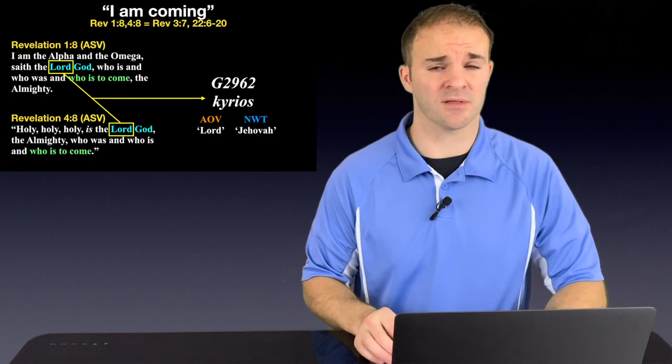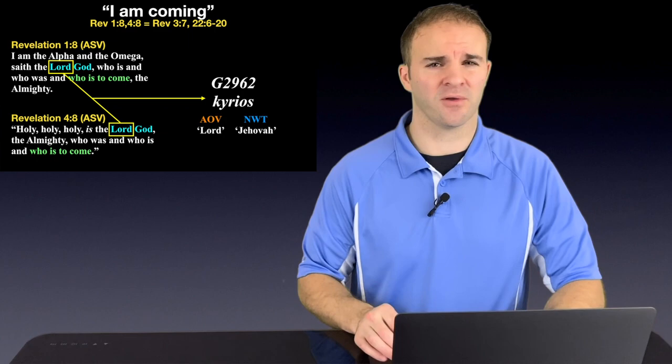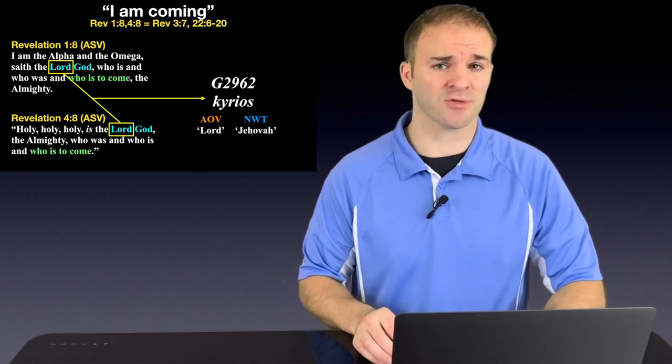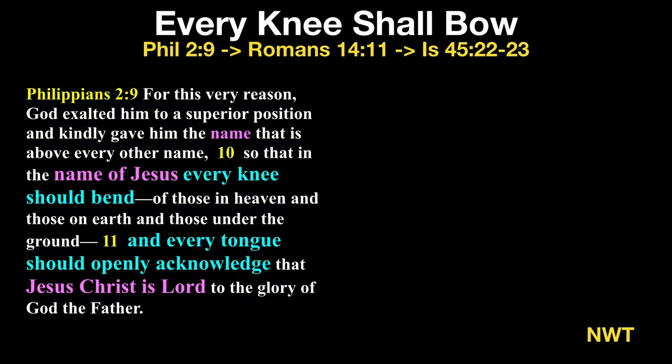What's great about getting into this discussion of Lord versus Jehovah is that the Watchtower Society couldn't fully get away from what Paul said about Jesus in Philippians chapter 2. Here, Paul says, Every knee will bow and tongue confess that Jesus is Lord. The same Greek word Kyrios is here as it is in Revelation.